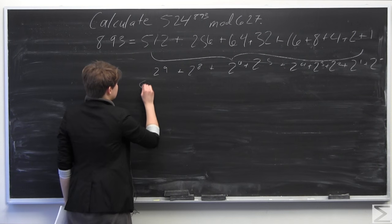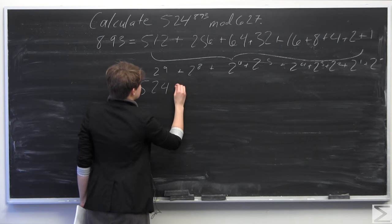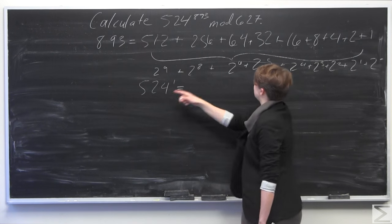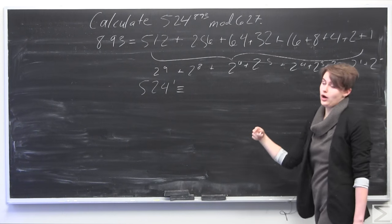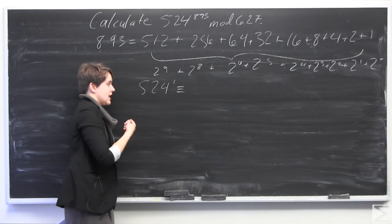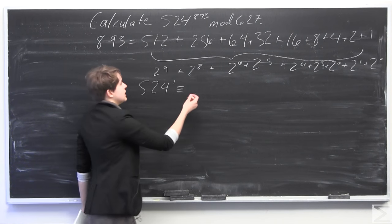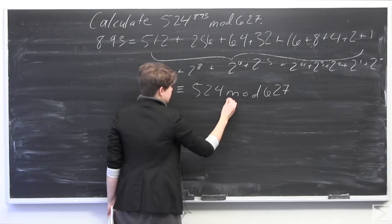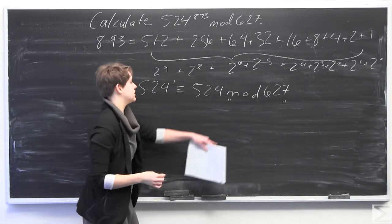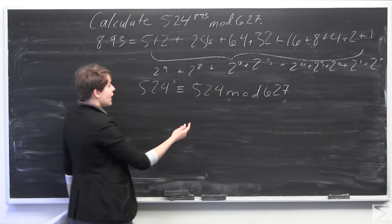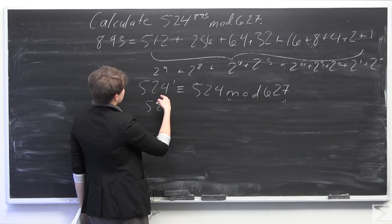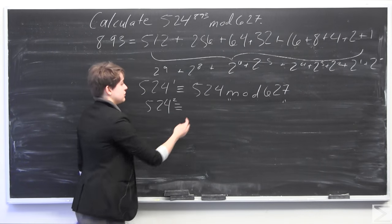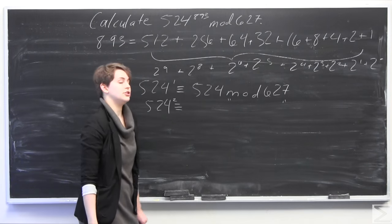So we can start off by saying 524 is 524 to the 1. So we're going to start from this side, and we're going to raise 524 to 1, 2, 4, 8, and so on, until we get up to 512. So we can say that 524 to the 1 is congruent to 524 mod 627. And I'm just going to write some quotations here, so I don't have to write mod 627 every single time.